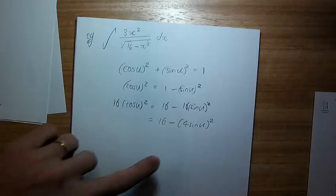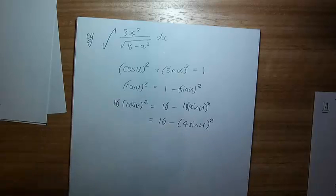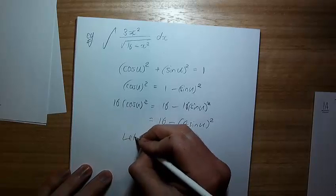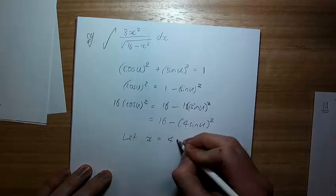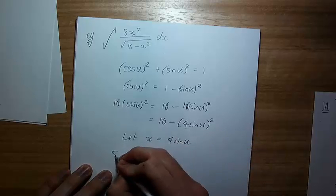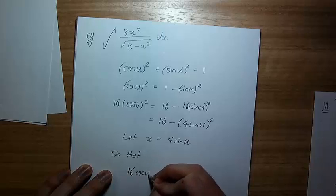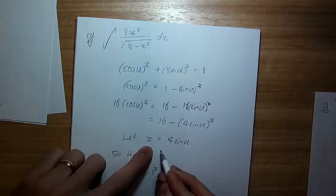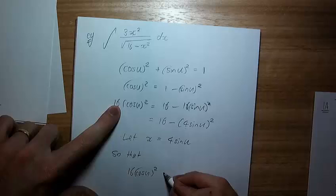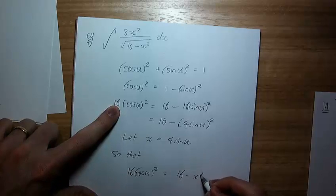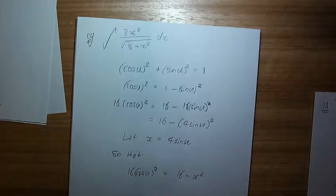Look, if this thing in here was x, it would match exactly. So that's what I'm going to do. So let x be 4 sine u so that this thing is now 16 minus x squared. And it matches precisely what is in my integral.